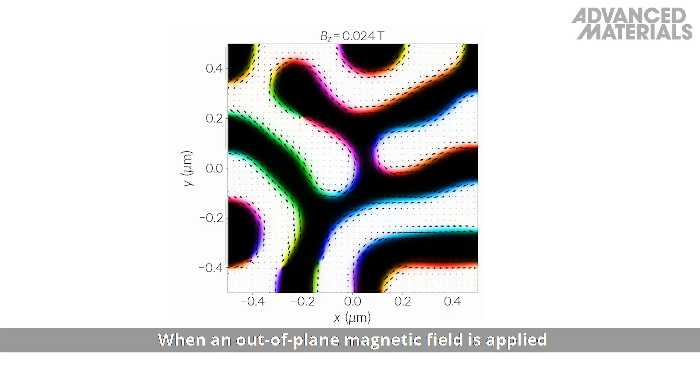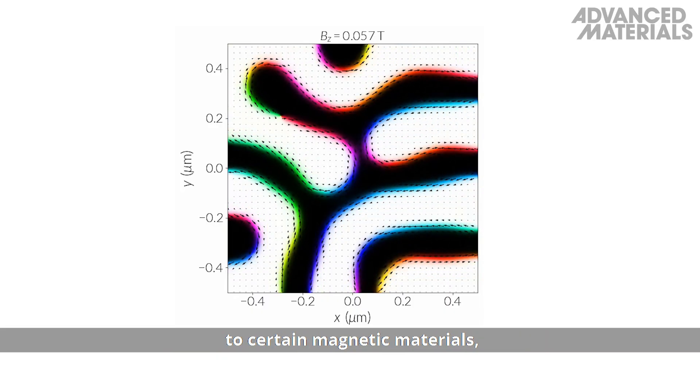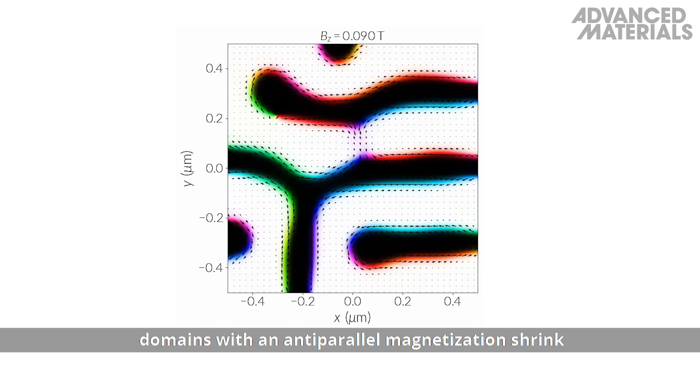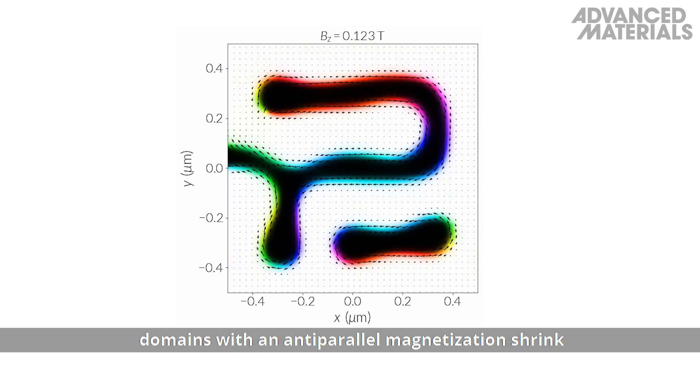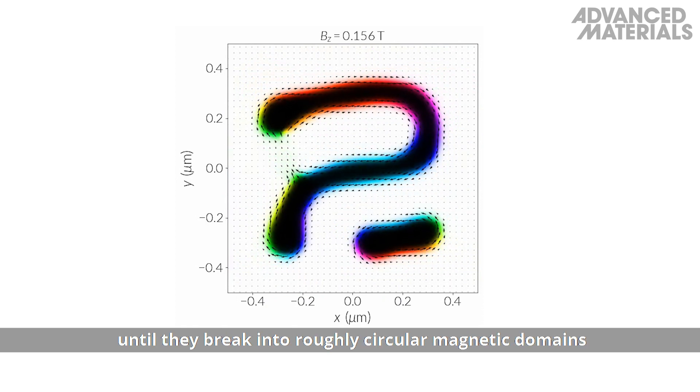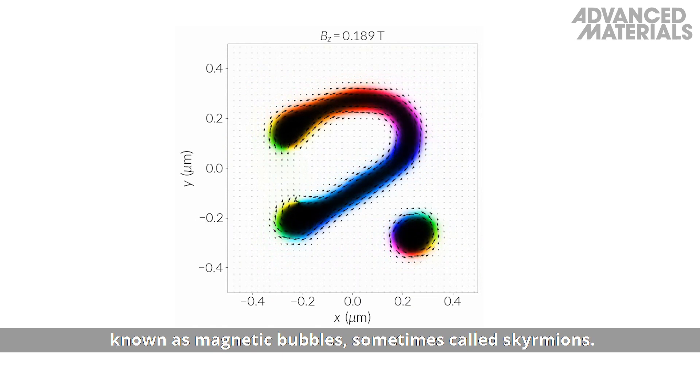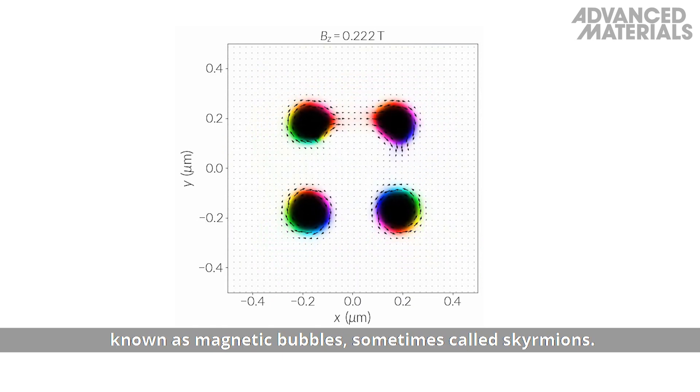When an out-of-plane magnetic field is applied to certain magnetic materials, domains with an anti-parallel magnetization shrink until they break into roughly circular magnetic domains known as magnetic bubbles, sometimes called skyrmions.